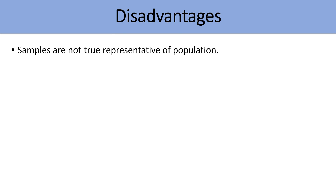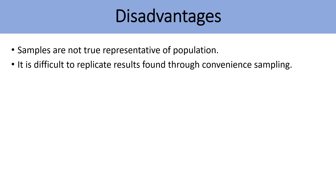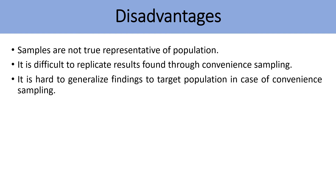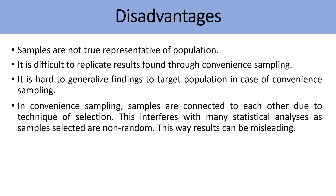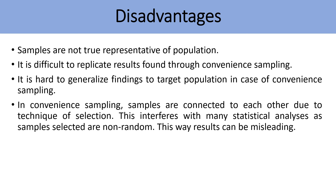Samples are not true representatives of the population due to the way the sample is selected. It is difficult to replicate results found through convenience sampling because the selected sample is a small chunk of the whole population — that is why it is also known as chunk sampling, where chunk means a small portion of the population. It is hard to generalize findings to the target population. Additionally, in convenience sampling, samples are connected to each other due to the technique of selection, which interferes with many statistical analyses. As samples are non-random, results can be misleading.